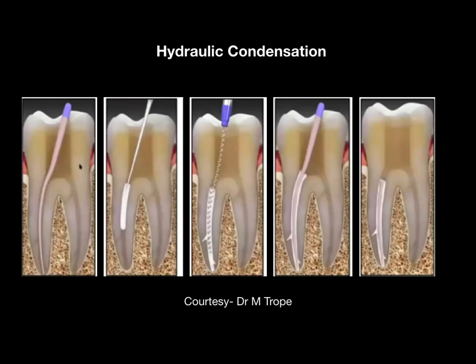Magnification is recommended for this hydraulic condensation technique. Without magnification, one may overfill the canals or end up with voids. Also, since the canal is filled with hydraulic sealer and only one gutta percha point is placed, the gutta percha may appear to hang coronally, making the obturation look short on the radiograph. These problems with the standard technique have led to the introduction of further variations.